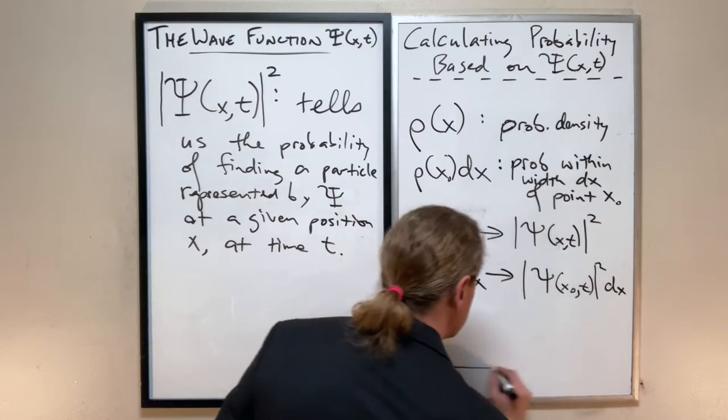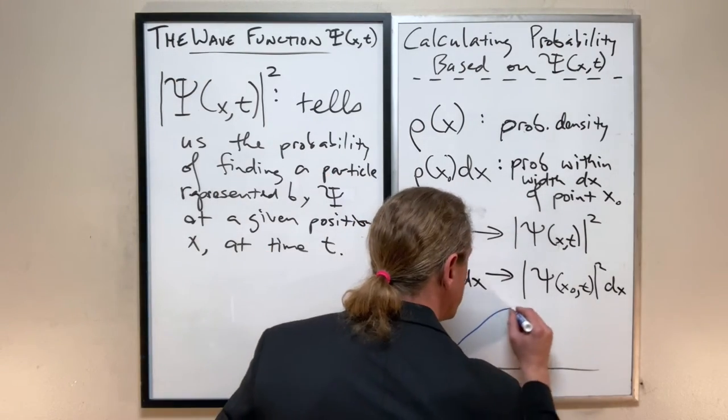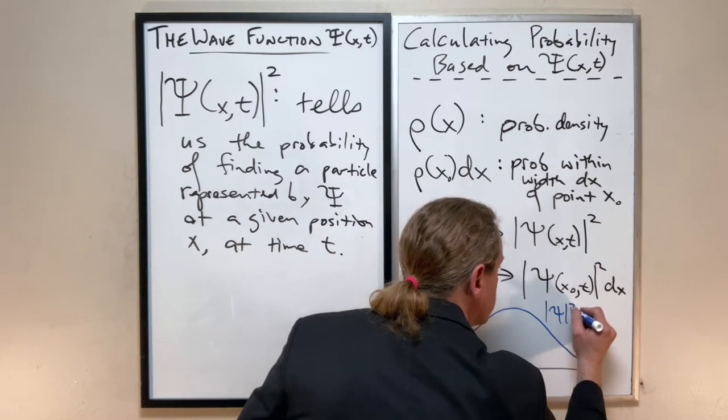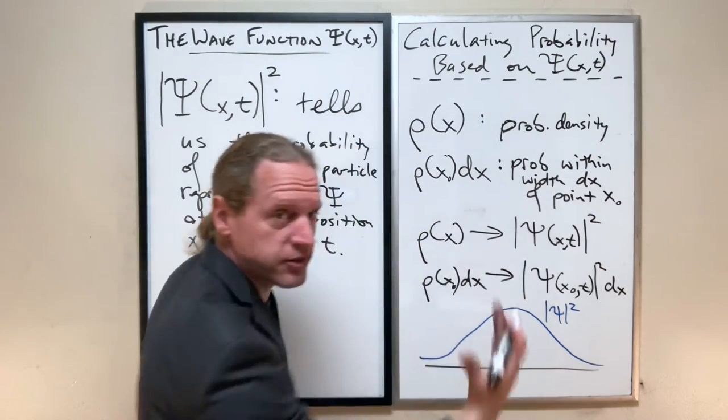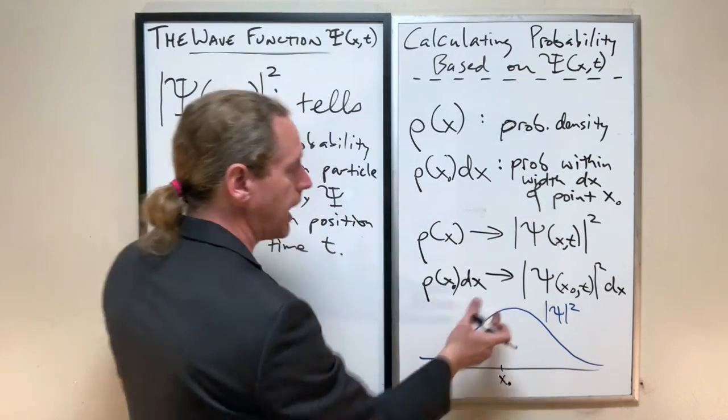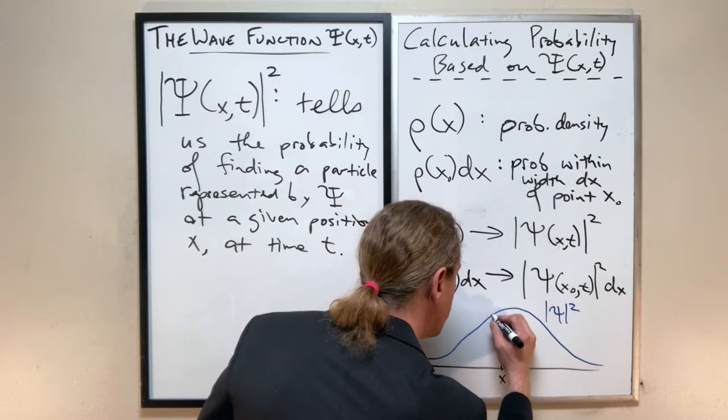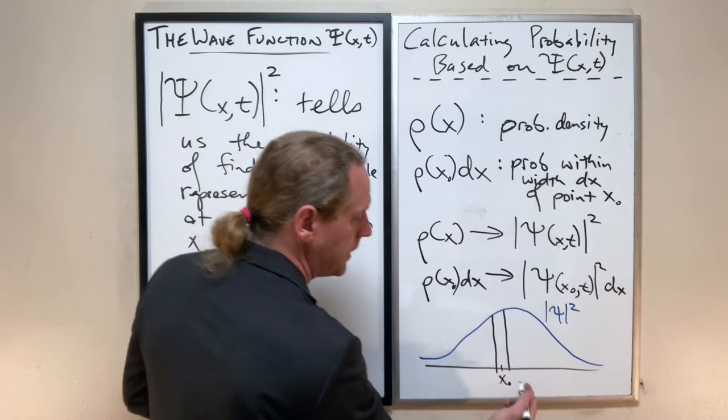And I'll write that out kind of exactly how we had before. Or if now this blue line indicates whatever psi squared is, and if we have a point x naught, I mean this is precisely what we just did, but I'm just going to turn this into our quantum interpretation now.